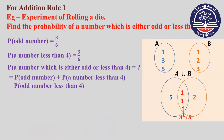The probability of a number that is odd, plus the probability of a number less than 4, minus the probability of a number that is both odd and less than 4. The probability of odd is 4 by 6, the probability of less than 4 is 3 by 6, and the probability of odd and less than 4 is 2 by 6. That gives us 3/6 plus 3/6 minus 2/6.